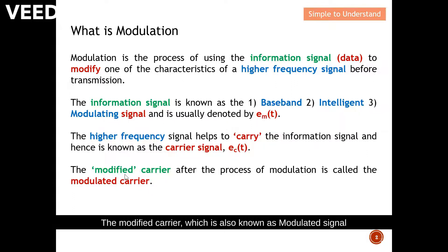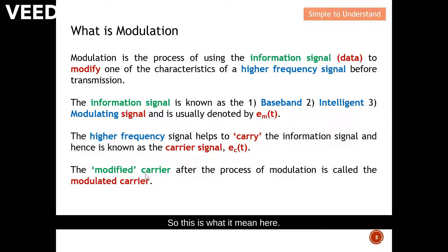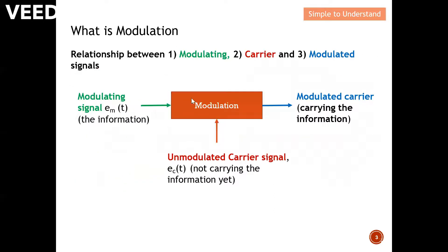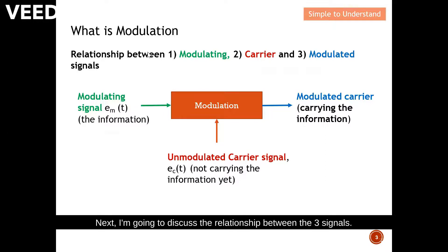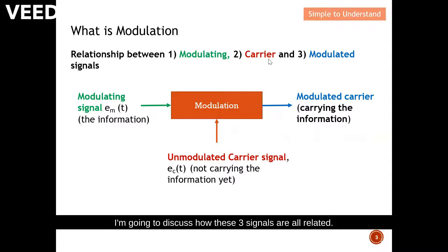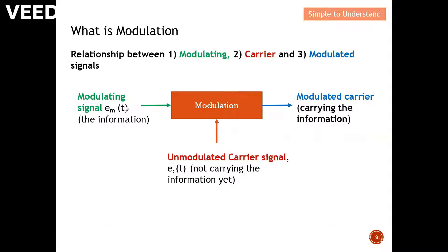The modified carrier, which is also known as the modulated signal, is the result after the process of modulation. Next, I'm going to discuss the relationship between the three signals: number one, the modulating signal; number two, the carrier signal; and number three, the modulated signal — and how these three signals are all related.